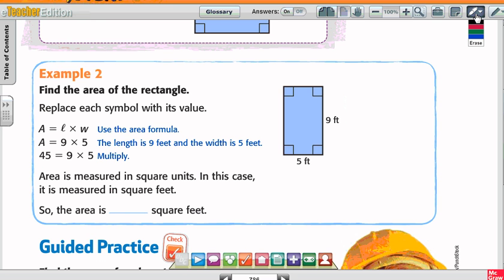So look at example number two. It says find the area of the rectangle. Replace each symbol with its value. So if I have area equals, what's the formula again? Length times width.